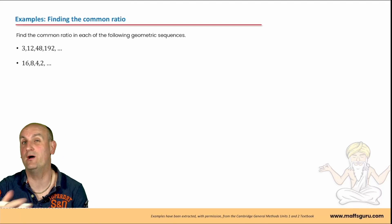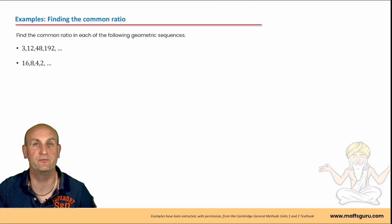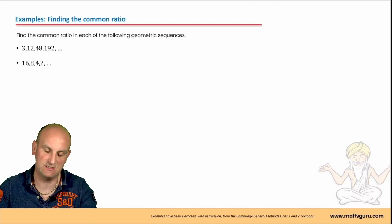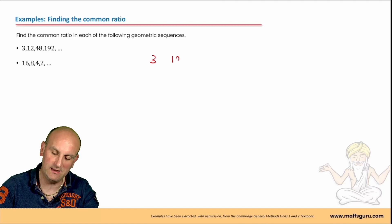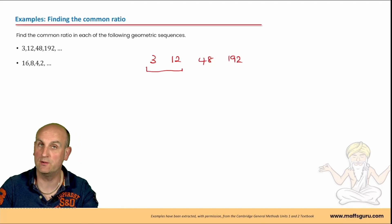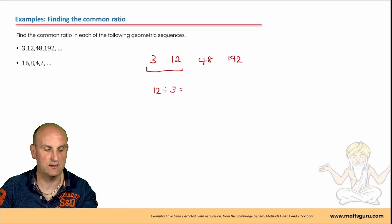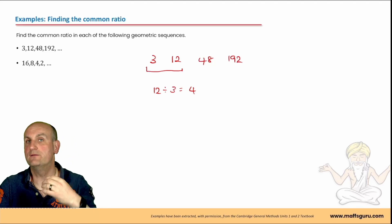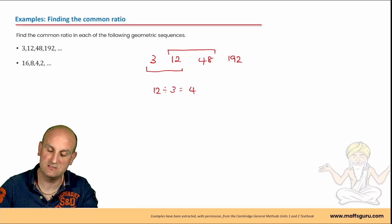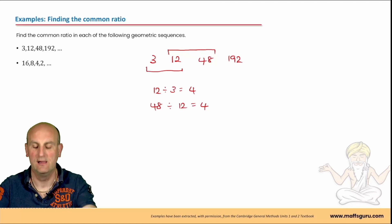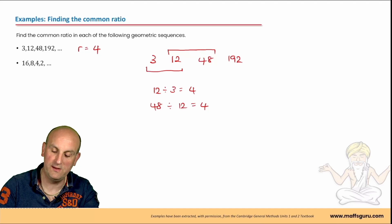Let's do some examples — find the common ratio. These are from the Cambridge textbook. First sequence: 3, 12, 48, 192. I test the first two: 12 divided by 3 is 4. I check the next pair: 48 divided by 12 is also 4. Those numbers are the same — I have my common ratio. For that sequence, R equals 4.